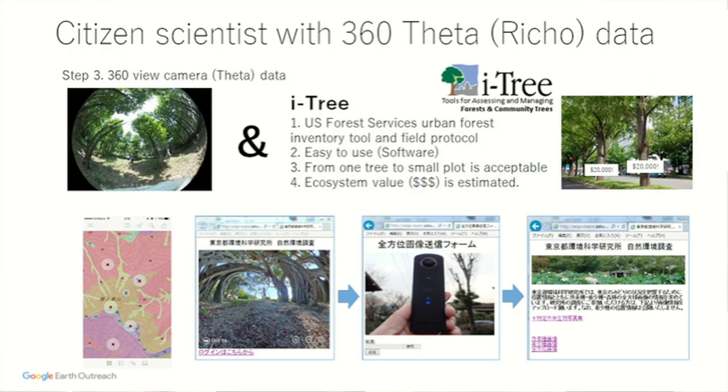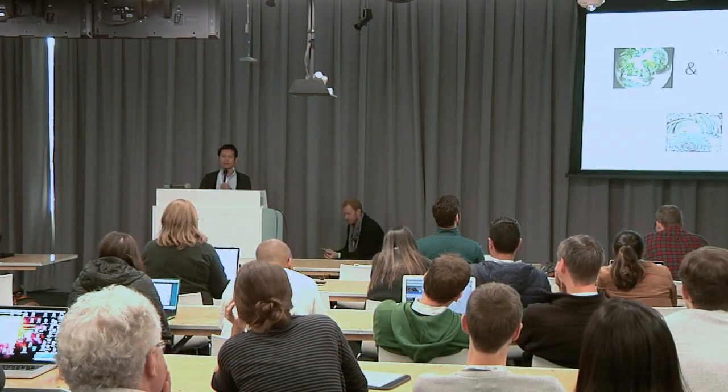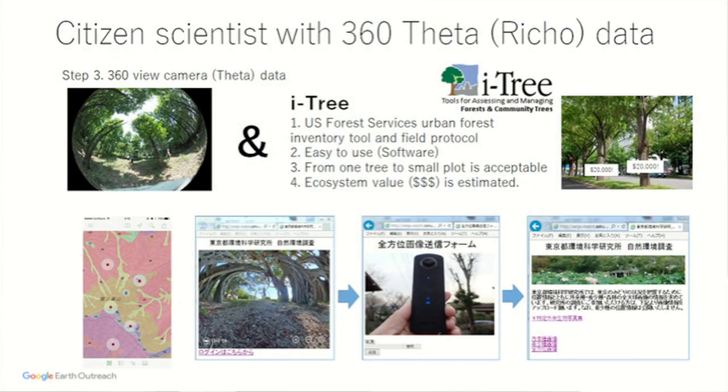Vertical direction means — what kind of structure is within the canopy? If there's more structure, it means more biodiversity. So we started to collect data using the Theta 360 camera, and we created a website to collect it.